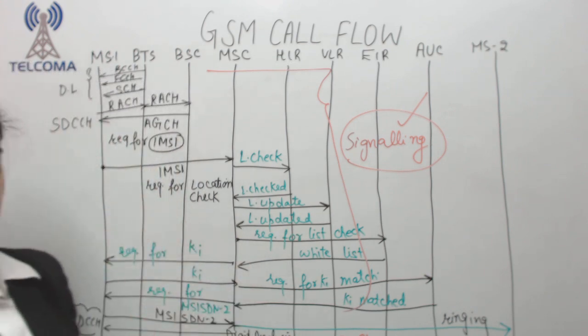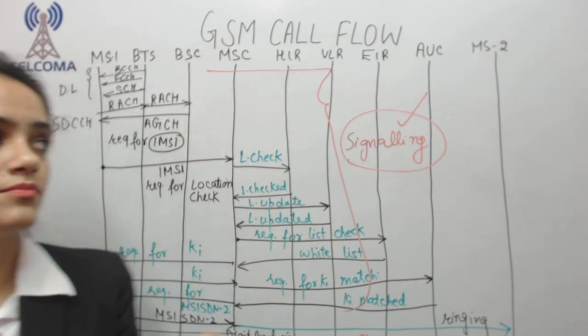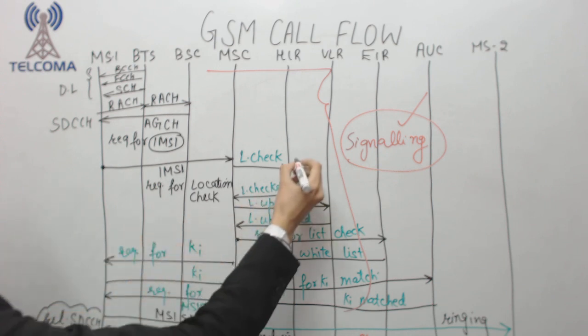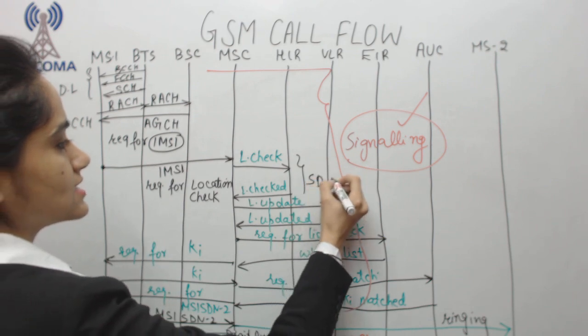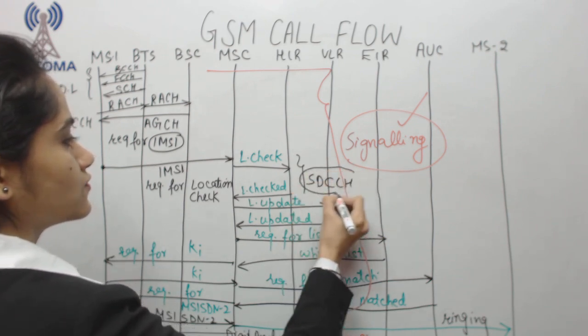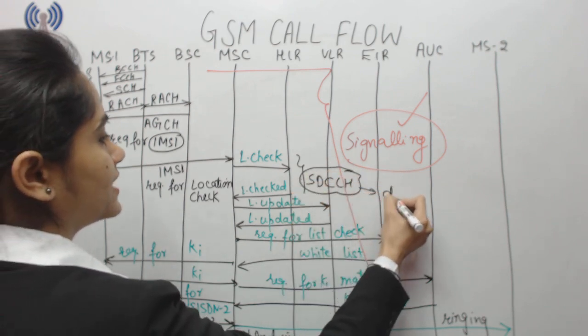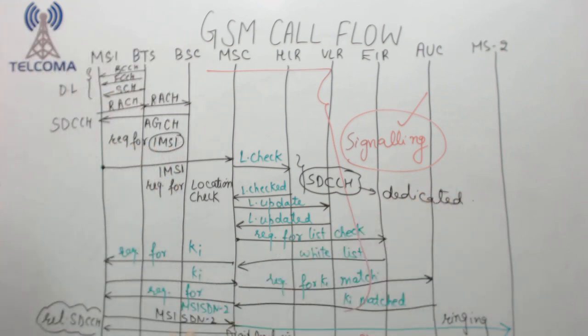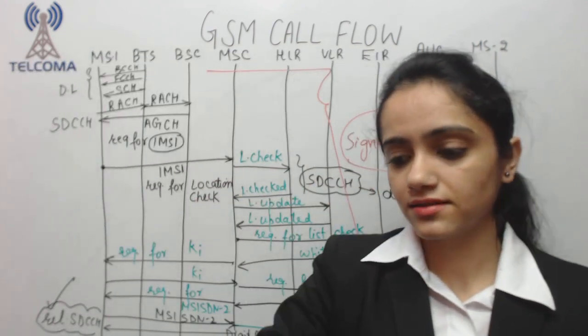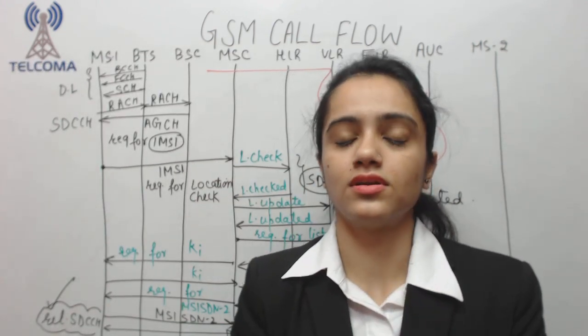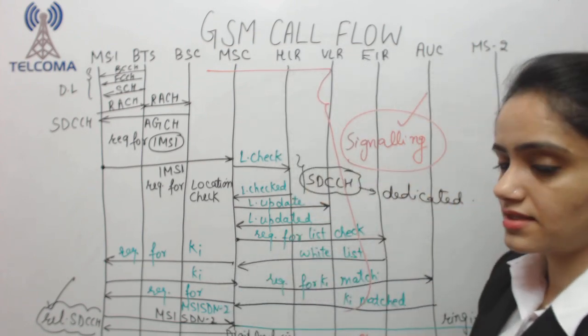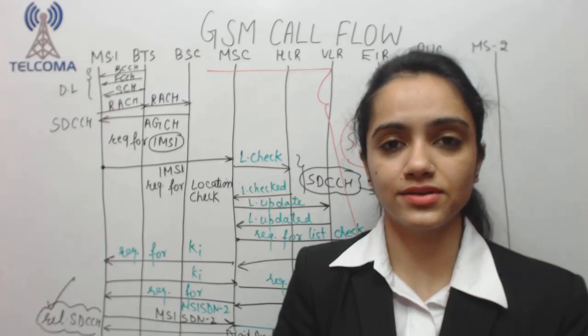This is a complete call flow between mobile stations under the same MSC and BTS. Each message is happening on SDCCH, which is a dedicated channel until we make a request to release. If during signaling there is an interruption, we call it SDCCH drop. During call if there is an interruption, it's a TCH drop. Thank you so much.